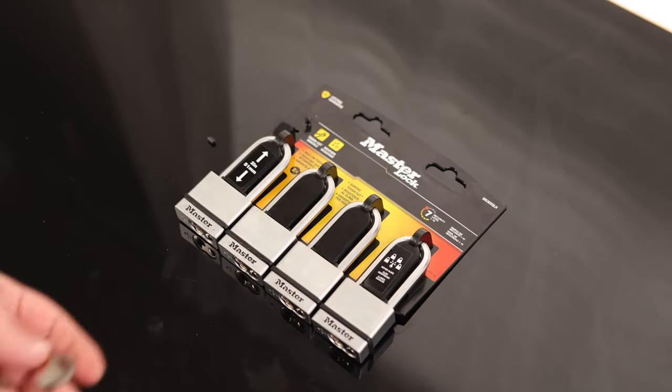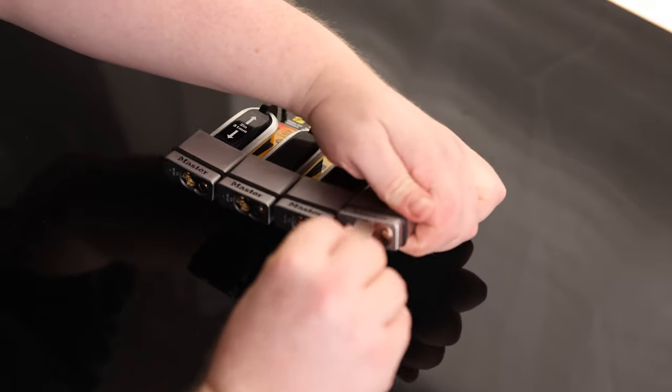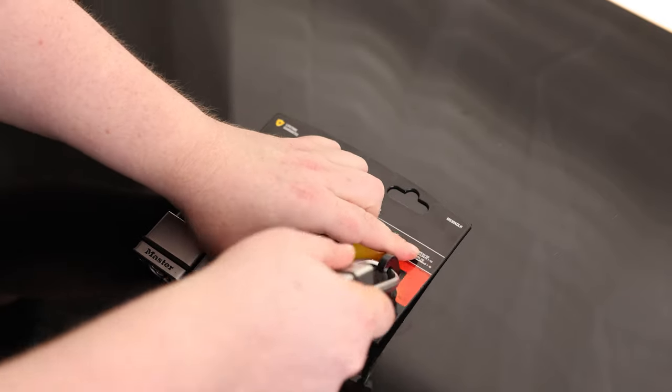It comes with two keys, which for me is plenty enough because these are all key-to-like. The main benefit of a key-to-like lock is you can put all these locks in different things like your shed, whatever the heck it is that you've got,